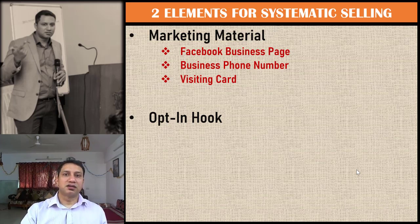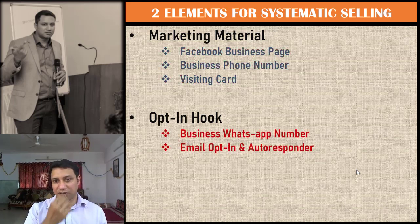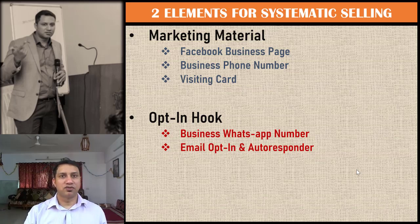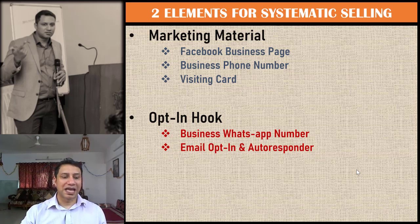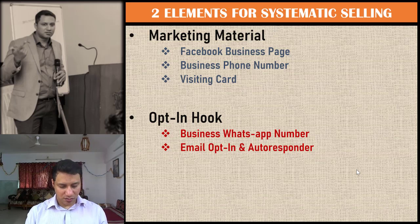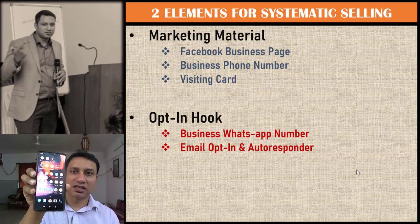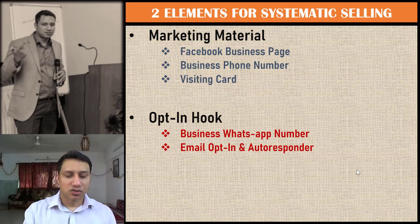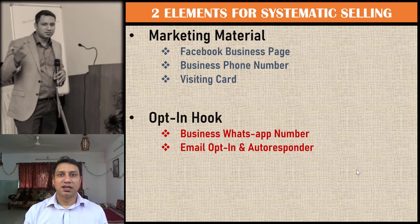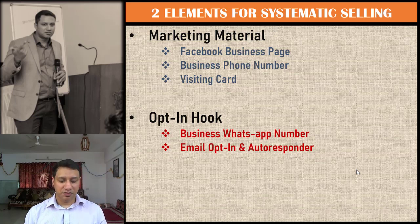The next two items are your opt-in hook: your business WhatsApp number and your email opt-in autoresponder. For business WhatsApp, just go to the Android or Apple app store and get WhatsApp Business. You'll see two icons on your phone — one is regular WhatsApp and one is WhatsApp Business with a 'B' on it. WhatsApp Business has slightly better features and lets you keep two separate SIM cards with two separate WhatsApp accounts on one device.